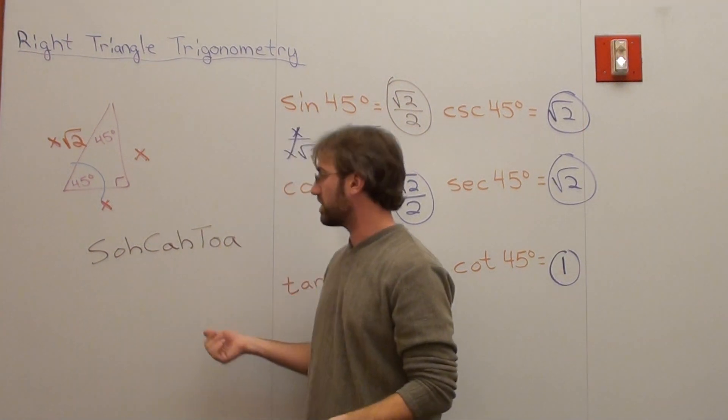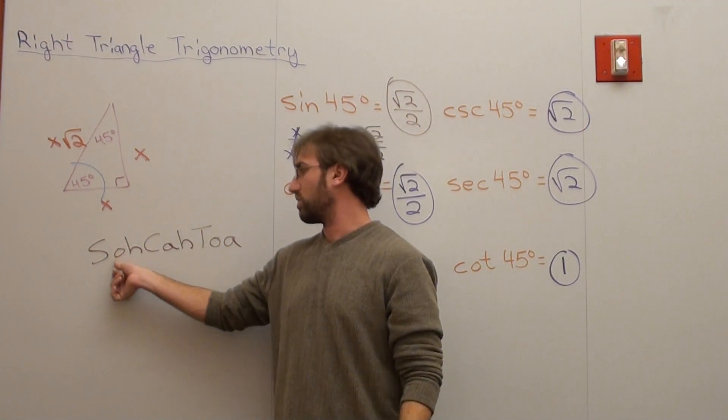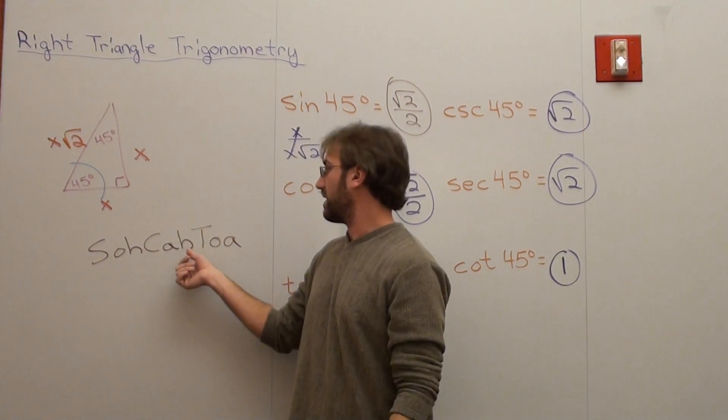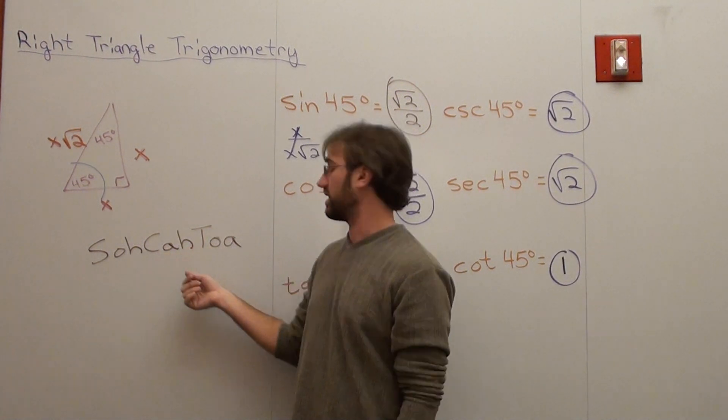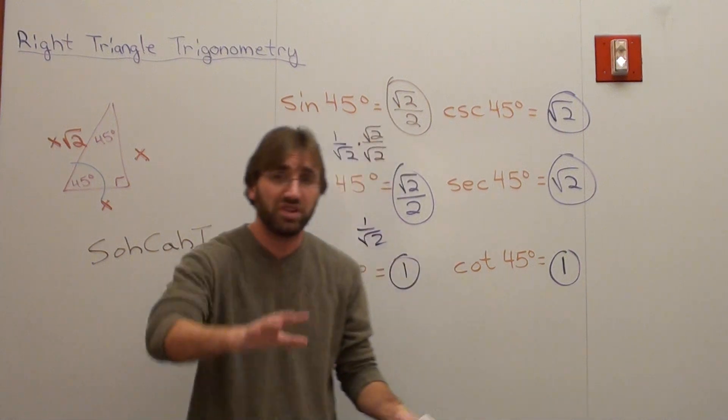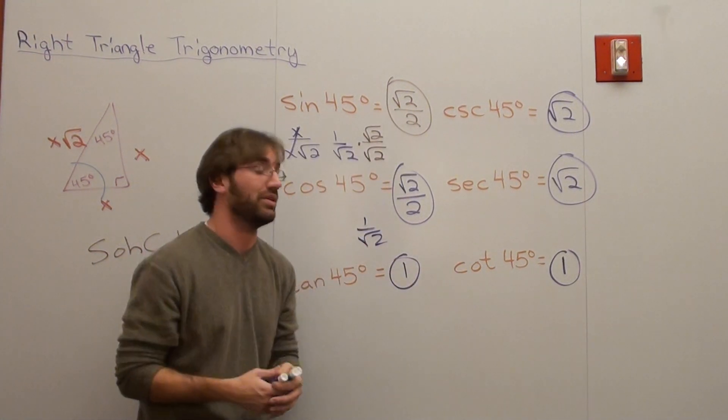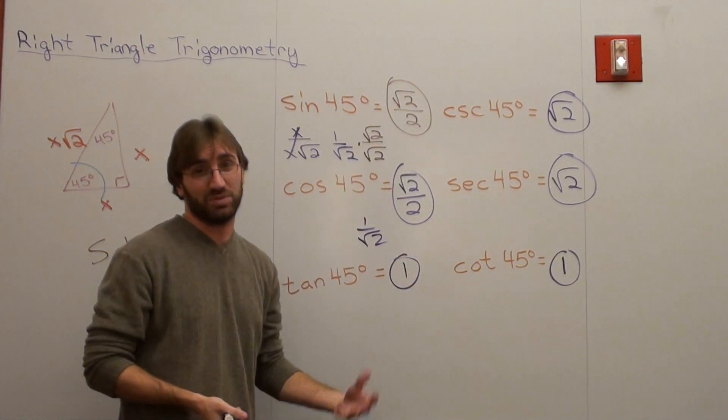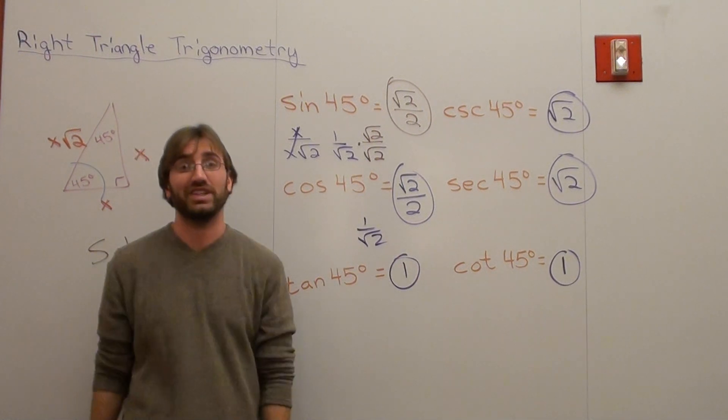And then if you want to find the cosecant, do hypotenuse over opposite. The secant is hypotenuse over adjacent. And the cotangent is adjacent over opposite. You can do that method too. It's perfectly fine. Whatever way is easier for you. Just trying to show you something that's pretty cool. With that said, have a good day. Go round.